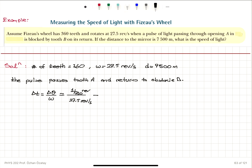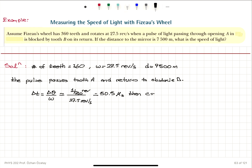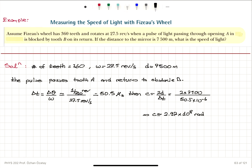The transit time is found to be 50.5 microseconds. Then the speed of light equals 2D divided by delta T — that is, 2 × 7,500 meters divided by 50.5 × 10⁻⁶ seconds. This gives us a value for the speed of light of 2.97 × 10⁸ meters per second.